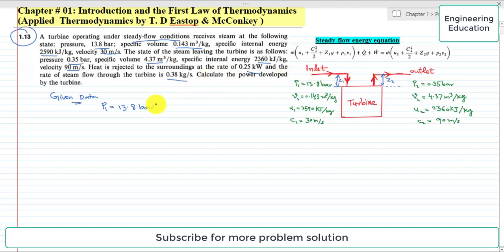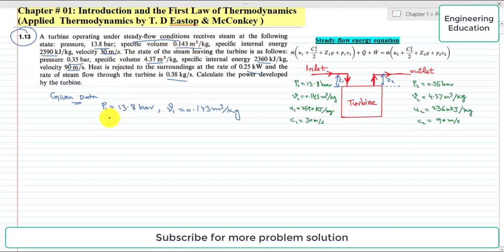Specific volume v1 is 0.143 cubic meter per kilogram. These are the conditions at inlet and these are the conditions at outlet. Specific internal energy u1 is equal to 2590 kilojoules per kilogram, and the value of velocity at inlet c1 is 30 meter per second.